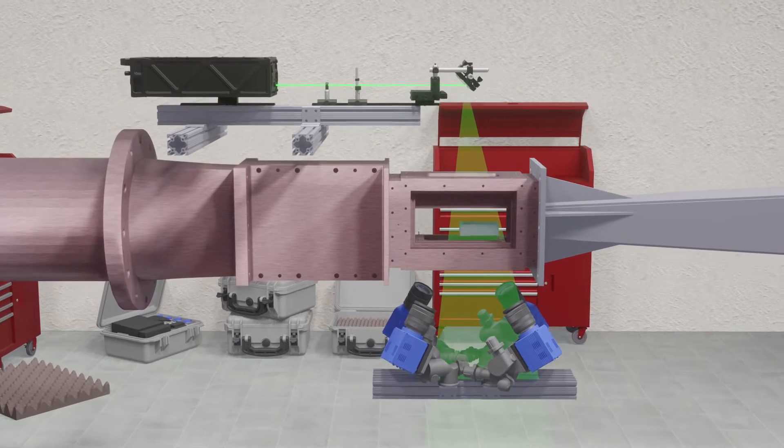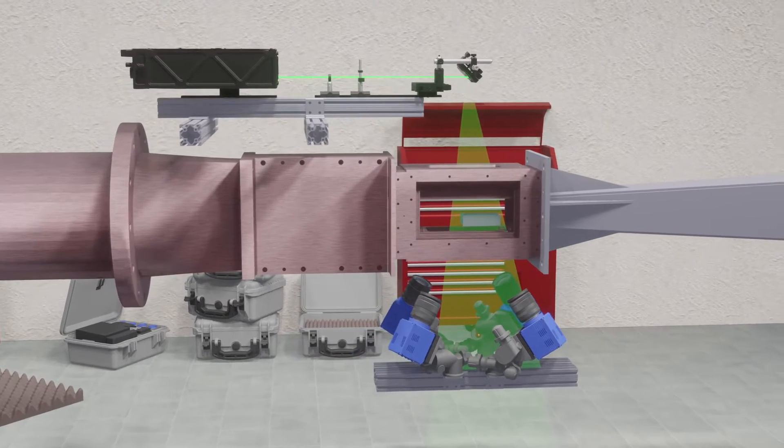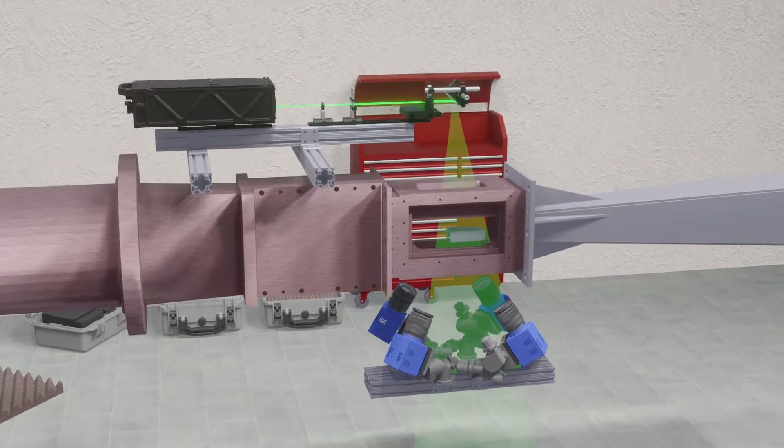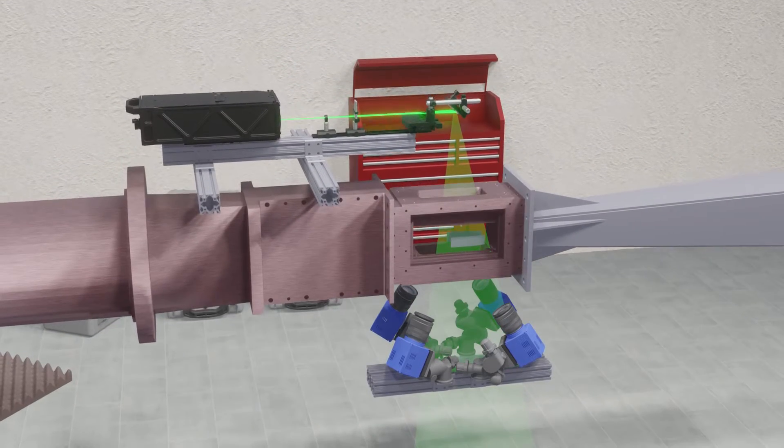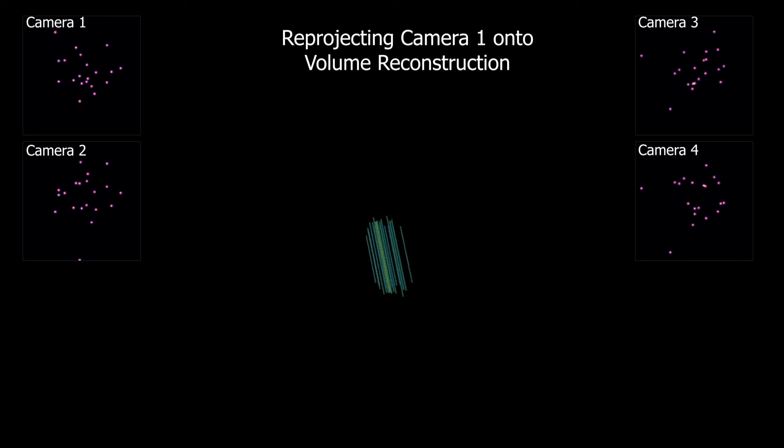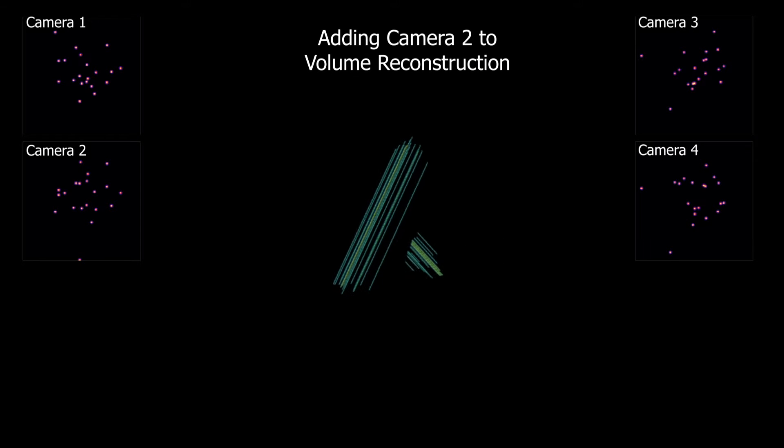I think Tomo PIV has some significant barriers for usage in wind tunnel testing especially in high speed flows. In Tomo PIV we illuminate a volume of particles and use some variation of the MART algorithm to integrate the views from multiple angles and reconstruct what the light volume of particles that produce the set of images seen by the multiple cameras should have been.